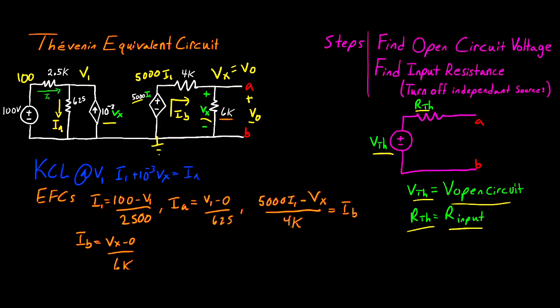In this video, for the sake of time, I'm going to keep the focus on the circuits and not go through solving the system of equations by hand. You can punch this into any system of equations calculator to get your final answer. In this case, V_x — which equals V_o — is equal to 60 volts.